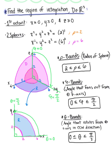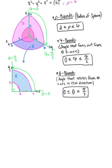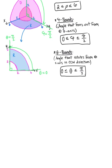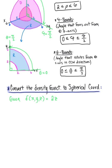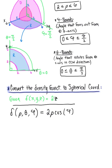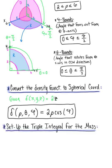Now we have the bounds of the solid region and are ready to convert the density function to spherical coordinates. We were given δ(x,y,z) = 2z. Converting to spherical coordinates, we replace z with ρcos(φ), giving us δ(ρ,θ,φ) = 2ρcos(φ). Now we have all the pieces needed to set up the triple integral to find the mass.